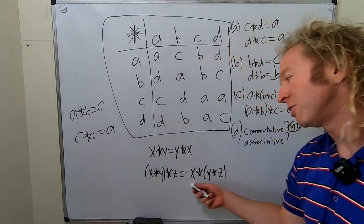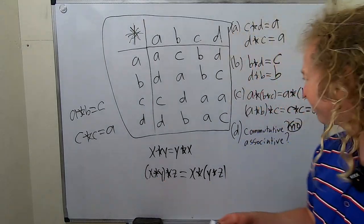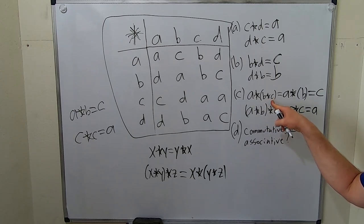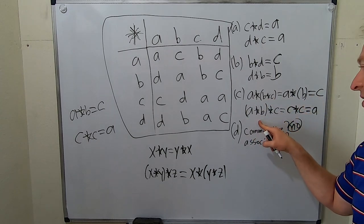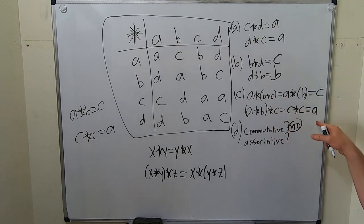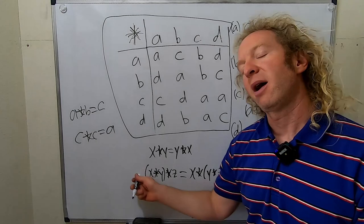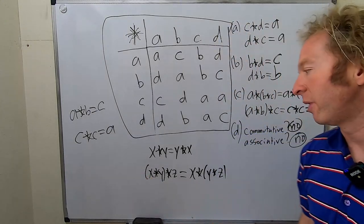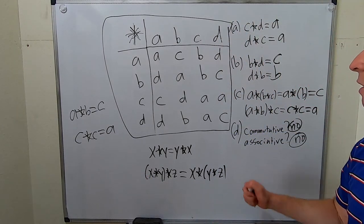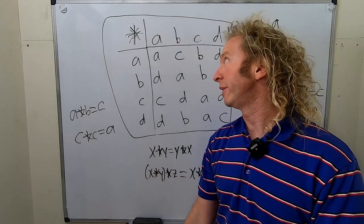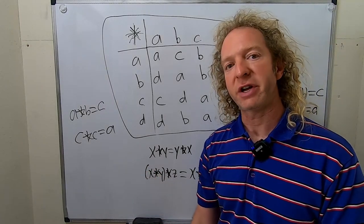For associativity, it also has to be true for all x, y, and z. We found a star (b star c) equals c, while (a star b) star c equals a. Since these are different, the operation is certainly not associative either. I hope this video has been helpful — take care.